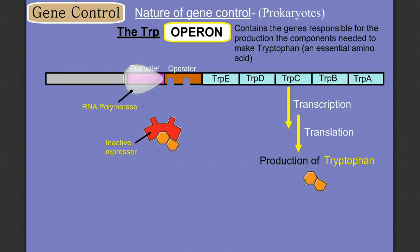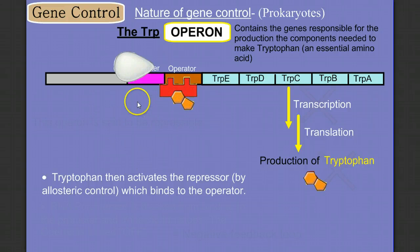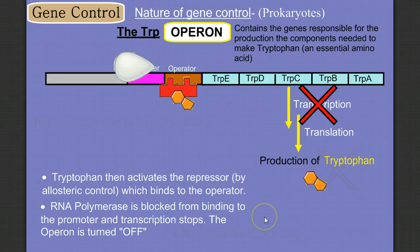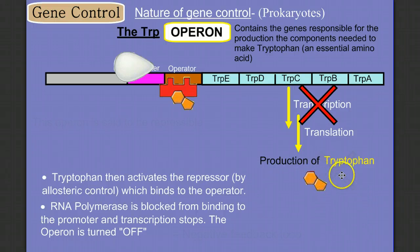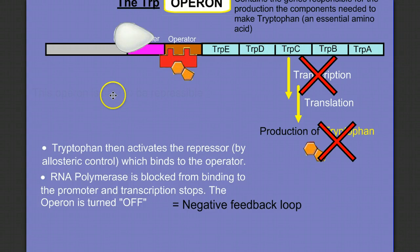When we make tryptophan, tryptophan acts as a co-repressor. It binds to the repressor, making it active and changing its shape. Now this repressor can bind to the operator, dislodging the mRNA from the promoter and blocking transcription — basically turning the operon off. So we have a set of genes whose job it is to produce tryptophan, and once we make tryptophan, its presence turns the system off. This is a negative feedback loop, and this operon is said to be repressible — it can be turned off.